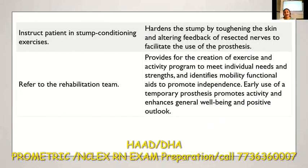Instruct the patient in stump conditioning exercises so that the stump becomes firm, and refer to the rehabilitation team. In post-operative management, once the stump is prepared and shrinkage devices are used, it is prepared for using a prosthesis — an artificial limb. Flexion contractures should be avoided. Active and isometric exercise and muscle strengthening exercises are important. The goal is to make the client as completely independent as early as possible by providing the prosthesis.